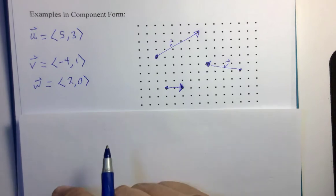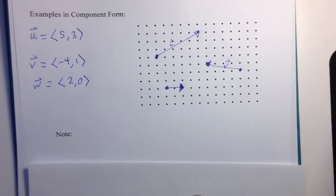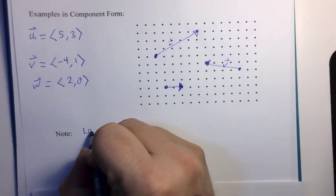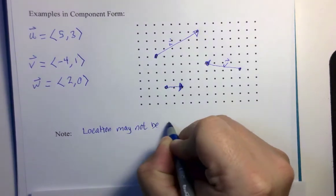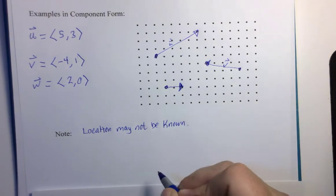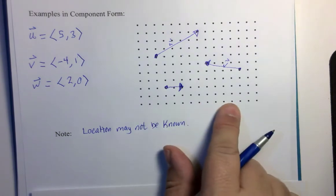Now, some highlights, some notes real fast. First, it doesn't matter where you start from. Location may not be known. In fact, for any of the vectors you're about to see, we don't know where a starting location is. And I intentionally left an X and Y axis off the grid to not distract you from assuming notations. When you're in linear algebra, you might always start from the origin. And we might do that later in this course. But for now, we just have a direction and a length. Direction and magnitude.